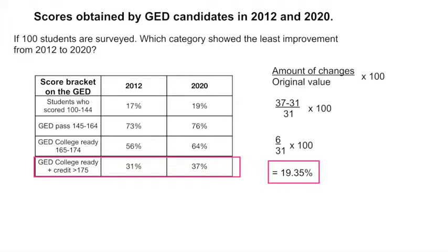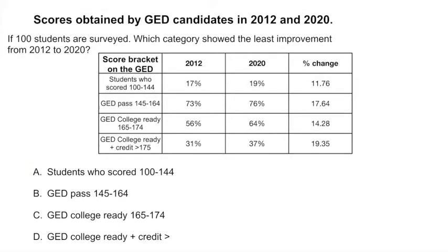If we put all those values in this table and look at the question again—which category showed the least improvement from 2012 to 2020—you can see that it's the first category, because the percentage change was only 11.76% compared to other categories where there was a higher percentage change.